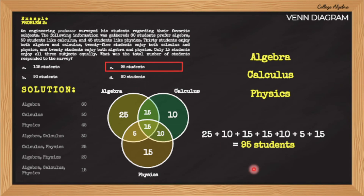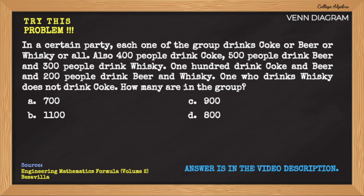Take note that if there are students who did not like all three subjects, the number should be placed outside these circles. The number should be included in the computation and must be added to these numbers, since the problem asks for the total number of students who responded to the survey. Try solving this practice problem and test your understanding. The correct answer is in the video description below. Check out my next video — I will teach you a much easier and shorter method in solving Venn Diagram problems: the plus minus method. Stay tuned.